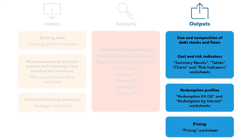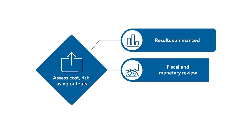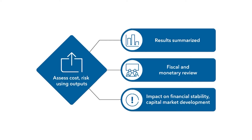After the debt manager has assessed the cost and risk characteristics of strategies using the output from the MTDS tool, the results should be summarized, for example in tabular or graph form. A small number of potential strategies should be identified, presented, and discussed with other policy authorities — both fiscal and monetary. The impact of the strategy on financial stability and capital market development should be considered.